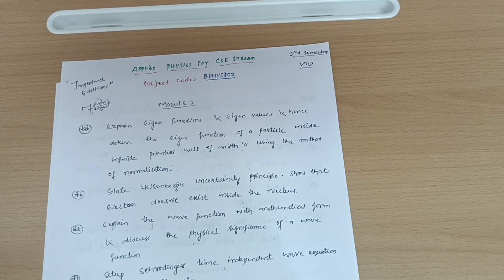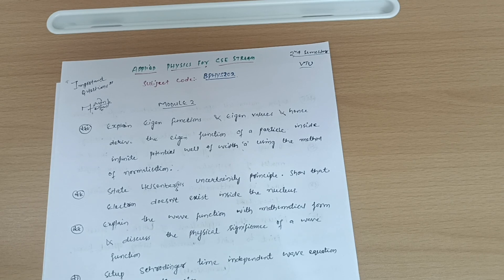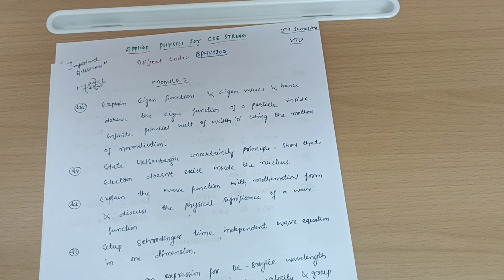Next is set up Schrodinger time independent wave equation in one dimension. Derive an expression for de Broglie wavelength of an electron, hence define phase velocity and group velocity. These are the five questions which you have to cover from module 2. There is a vast syllabus in the physics subject, so I have taken five questions which are the most important ones. If you just cover these five questions, you will at least get 15 marks.